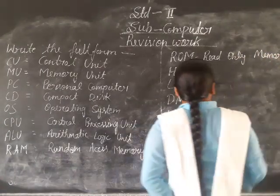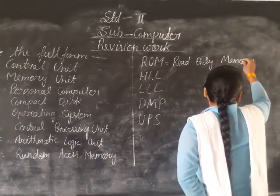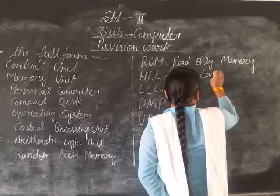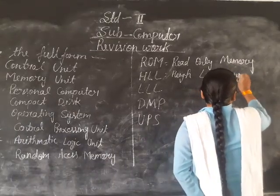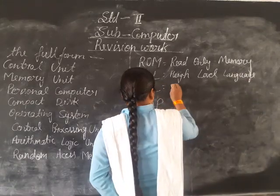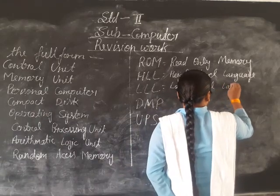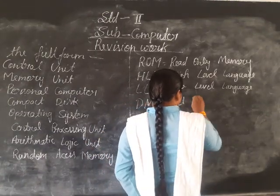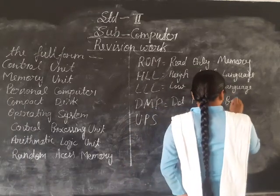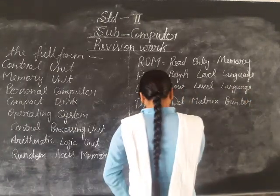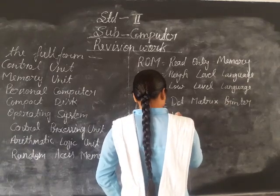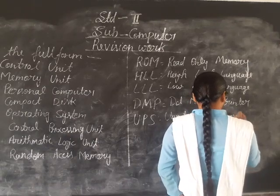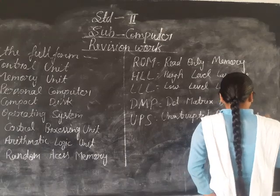ROM: R-E-A-D Read, O-N-L-Y Only, M-E-M-O-R-Y Memory. HLL stands for High Level Language — H-I-G-H Level Language L-A-N-G-U-A-G-E. And LLL stands for Low Level Language L-A-N-G-U-A-G-E. DMP stands for Dot Matrix Printer — D-O-T M-A-T-R-I-X Matrix Printer P-R-I-N-T-E-R. UPS stands for Uninterruptible Power Supply — U-N-I-N-T-E-R-R-U-P-T-E-D Power P-O-W-E-R Supply.